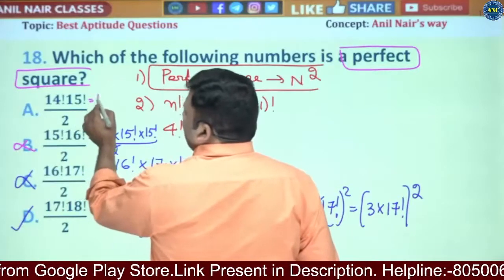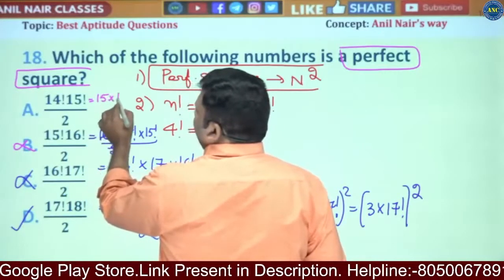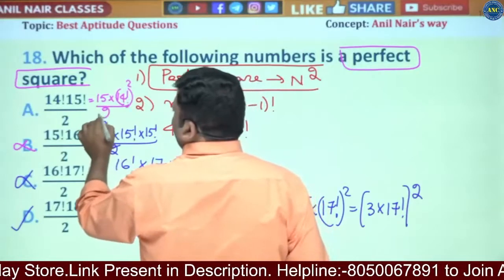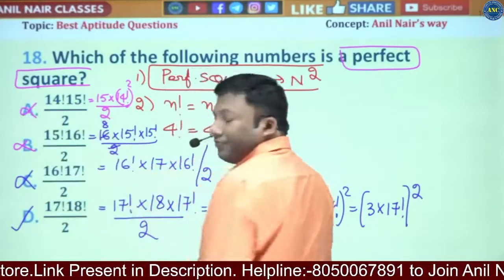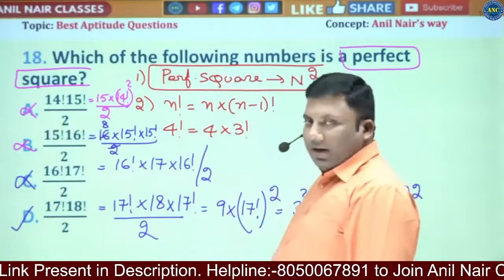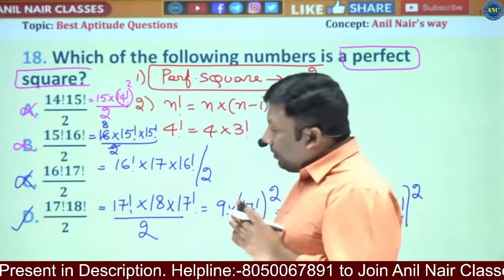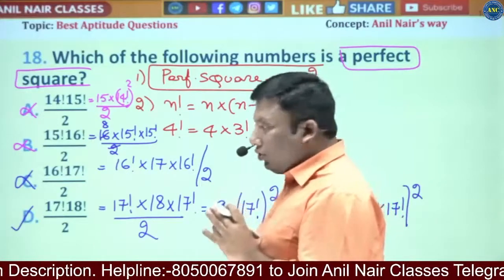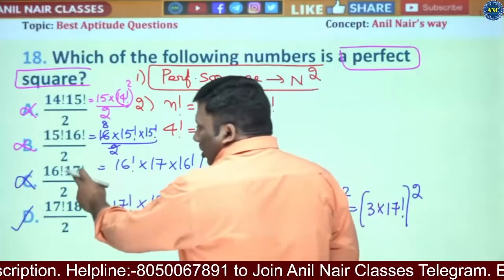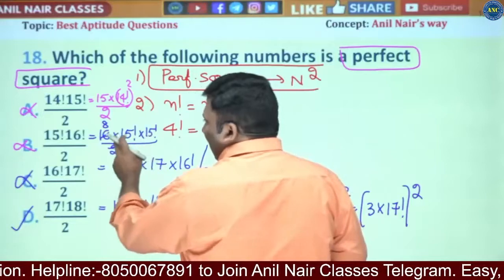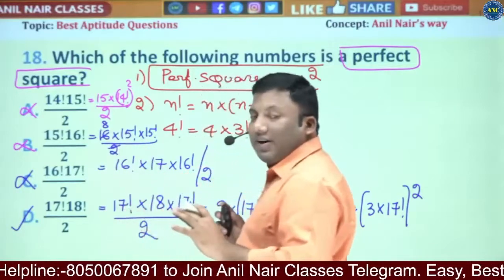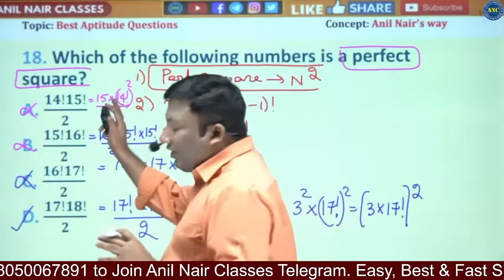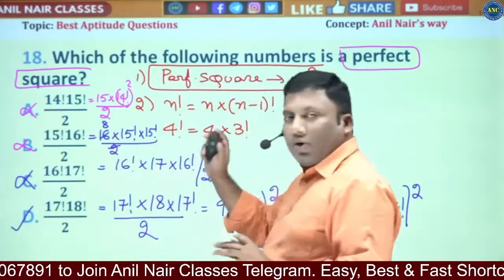For 14! × 15! / 2: this becomes 15 × (14!)² / 2. Since 15 is not divisible by 2, it is not possible. A perfect square's power of 2 must be even. 17 and 15 are not divisible by 2, and 8 means the result ends in 8 — a perfect square never ends with 2, 3, 7, or 8.